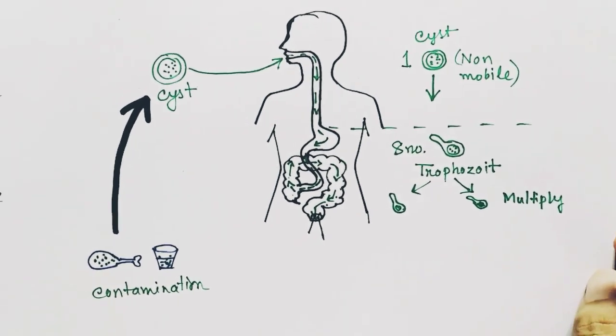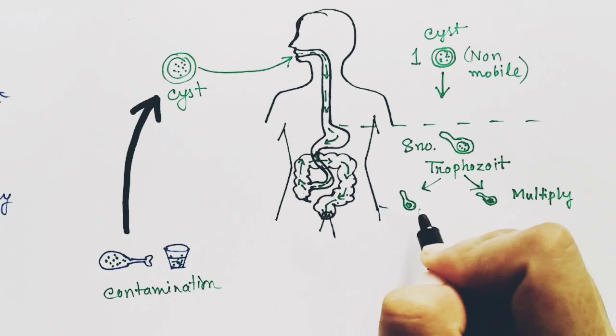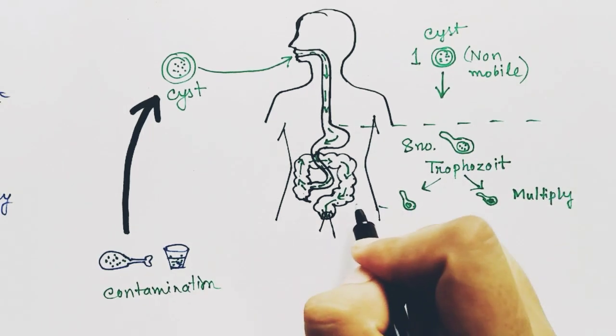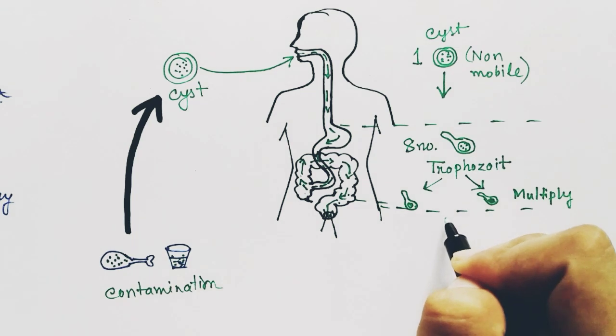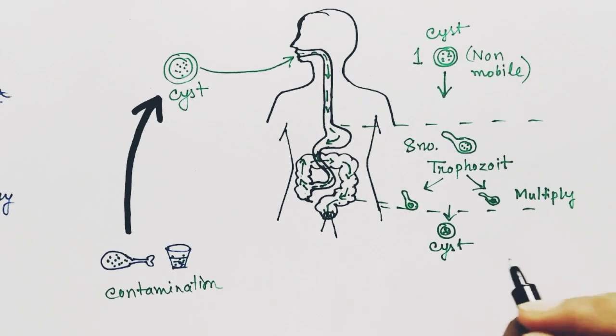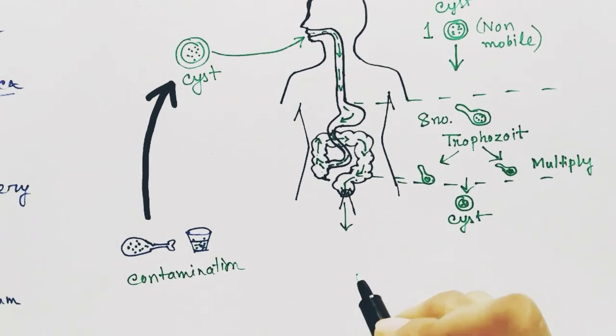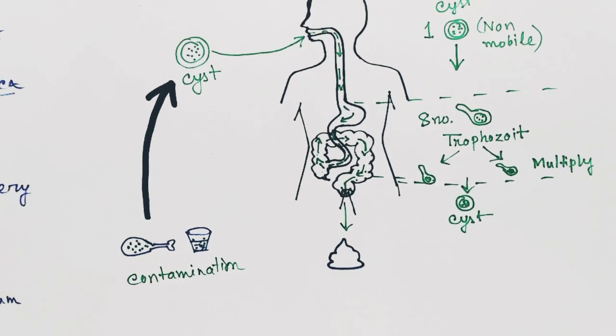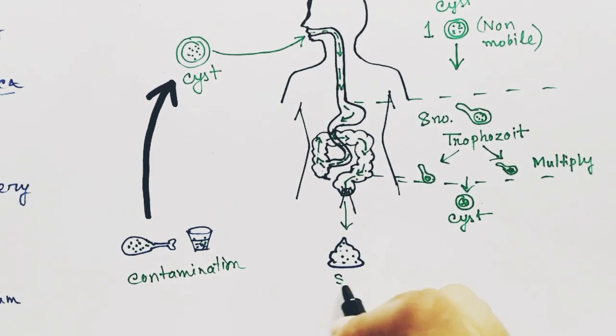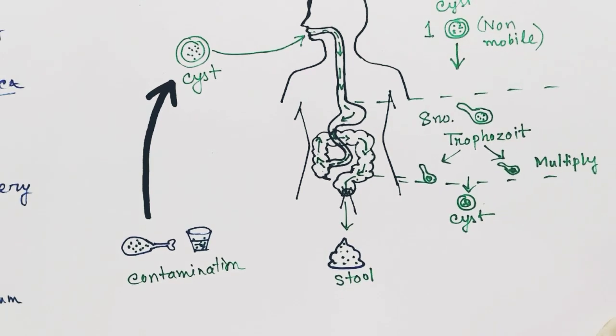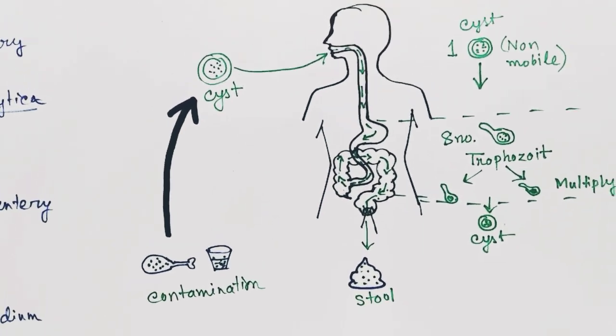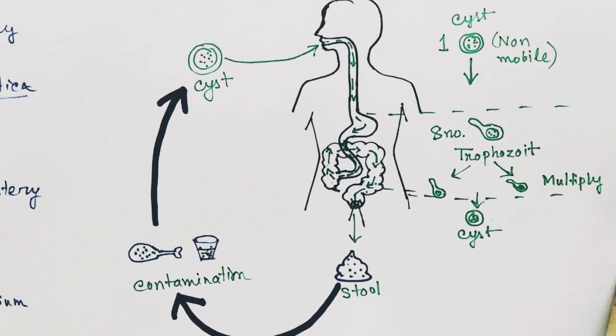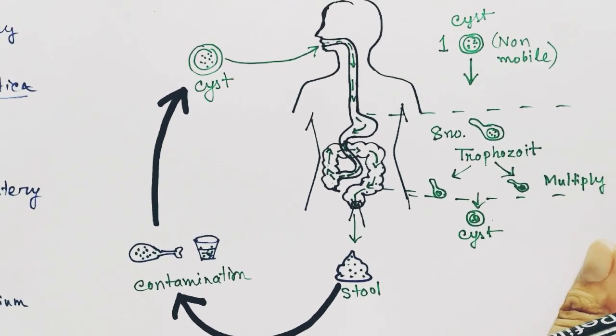Simultaneously, it forms cysts, the non-mobile form. The cyst goes out of the body with the feces or stool. The stool of the infected human contains lots of cysts of Entamoeba histolytica, which again contaminates food or drinks, and the cycle goes on.